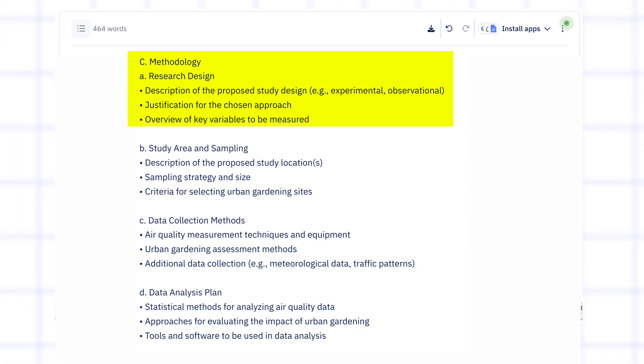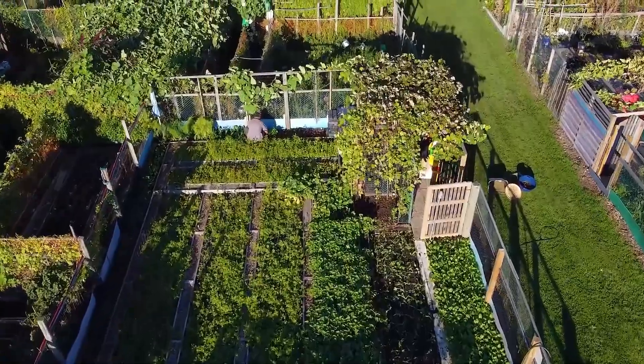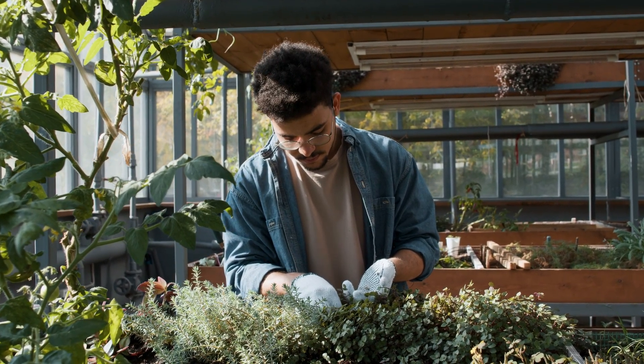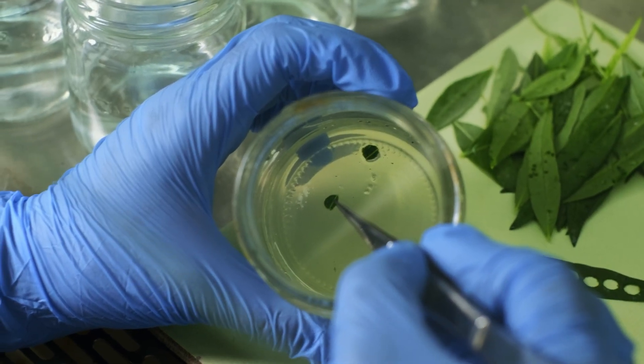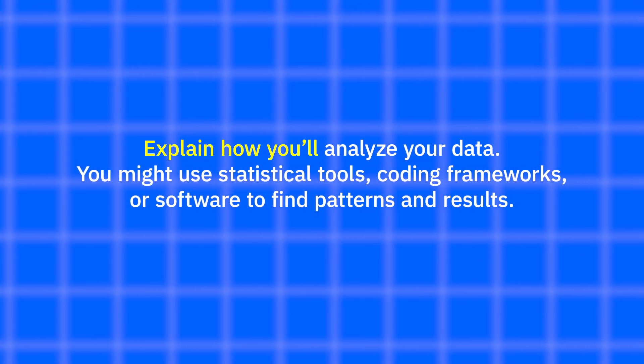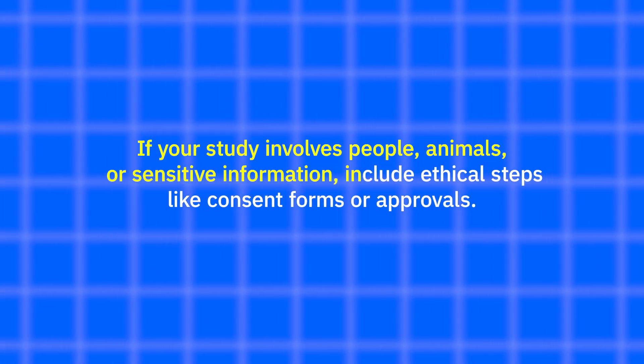Now let's talk about the methodology section. This is one of the most important parts of your proposal because it explains how you're going to do your study and whether your idea is practical and logical. Start with the theoretical framework — the theory or framework your study is based on. Then explain your methods: will you do experiments, case studies, simulations or surveys? For data collection, be clear about how you'll collect the data — describe materials, tools, steps, who your participants are and what information you'll gather. For data analysis, explain how you'll analyze your data, such as using statistical tools or software to detect patterns. Finally, include ethical considerations if your study involves people, animals or sensitive information — like consent forms or approvals. This section shows that your study is feasible, well thought out and organized.